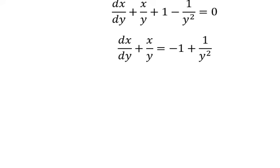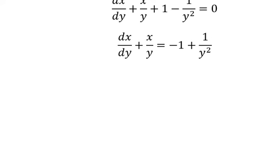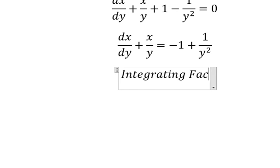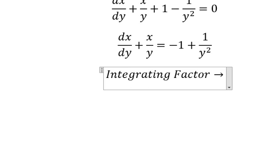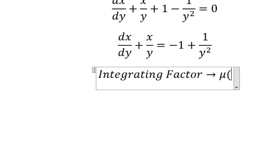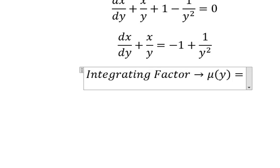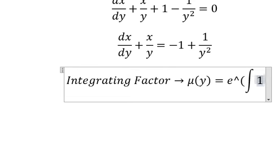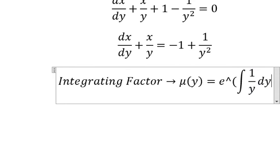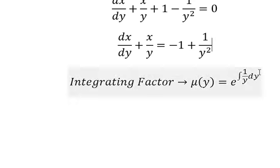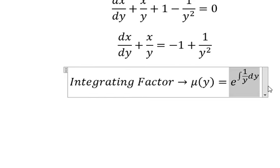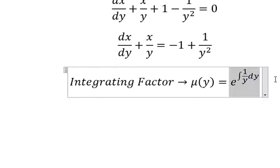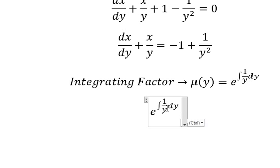So we can use an integrating factor. We need to find mu of y equals e to the power of the integral of 1 over y dy. So 1 over y, that's it. From here, the integral of this one we have ln y.